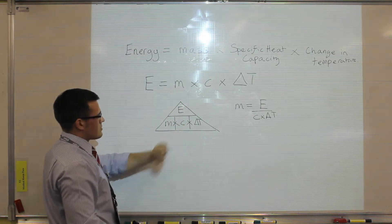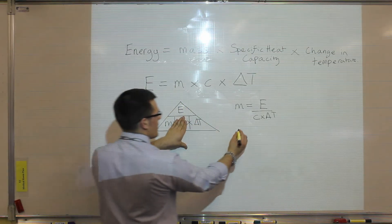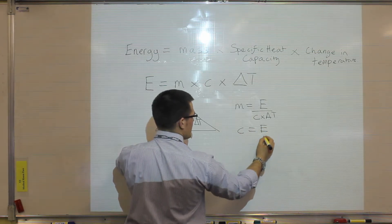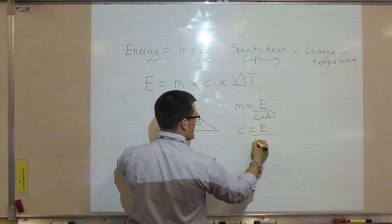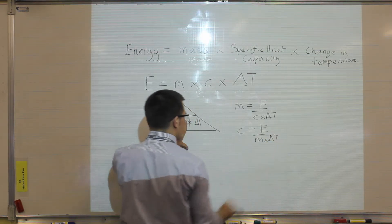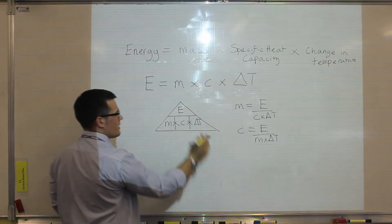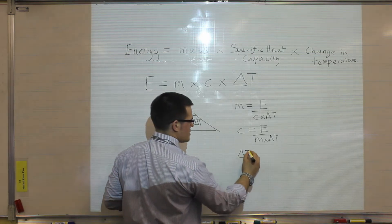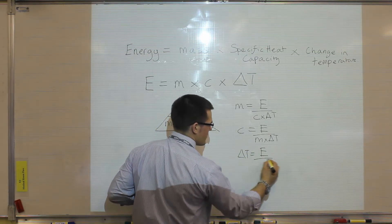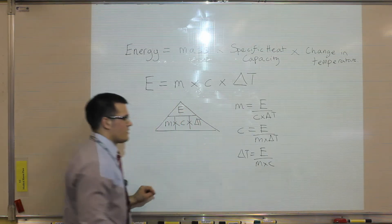To work out specific heat capacity, cover it and you get energy divided by mass multiplied by the change in temperature. For the change in temperature, cover it and you get delta T equal to energy divided by mass multiplied by specific heat capacity. We now have four equations in the triangle to calculate each individual quantity.